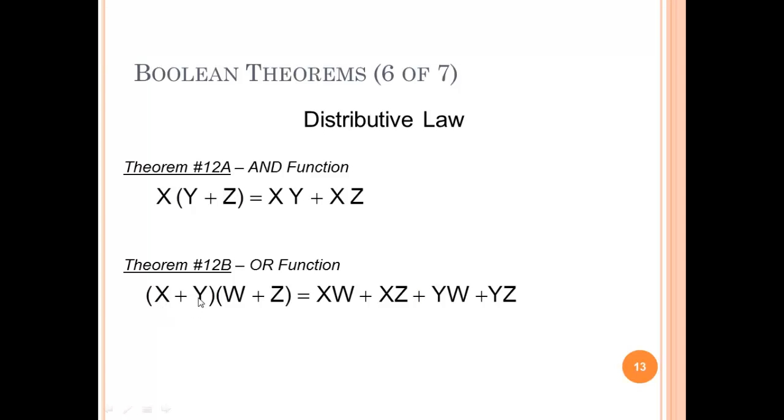Then if we have (X OR Y) ANDed with (W OR Z), that basically we can multiply that out. So we would do X times W and get the first term. Then we do X times Z and get the next term. Now we have to take the Y and do Y times W, get the third term. Y times Z, get the fourth term. When you were in algebra, you might have called that the FOIL method.